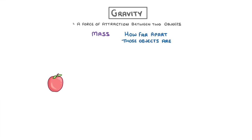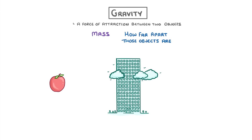So for small objects, like apples or even buildings, the gravitational force of attraction is so tiny it's as though it doesn't even exist, because they both have relatively low masses.